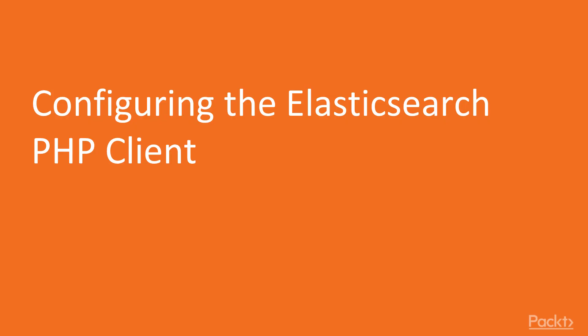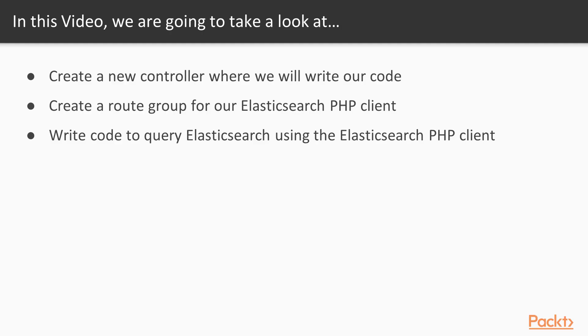In this video we're going to take a look at configuring the Elasticsearch PHP client — this is the official client released by the Elasticsearch creators. We'll create a new controller where we'll write all of our code. In this controller we'll write a constructor where we'll instantiate both the Elasticsearch PHP client and the Elastica client so we can use them in future videos. We'll create a new route group and write code to query Elasticsearch using the PHP client. Let's get started.